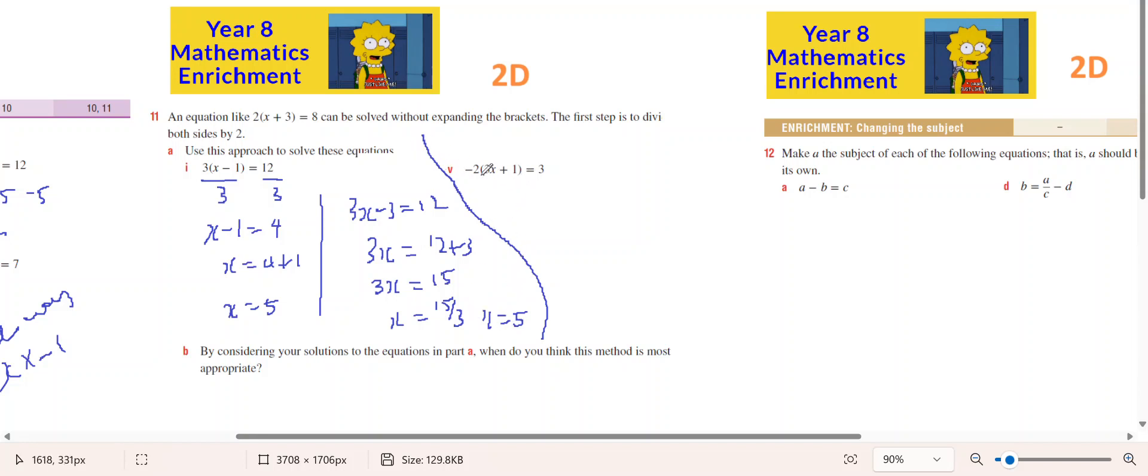Part 5, if I was to divide first, I get 2x plus 1 equals 3 divided by negative 2. 2x plus 1 equals negative 3 on 2.